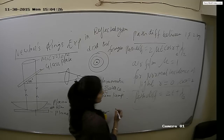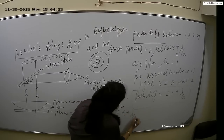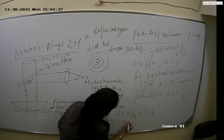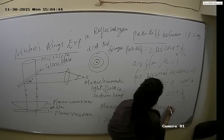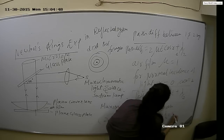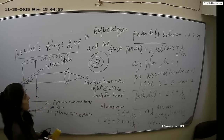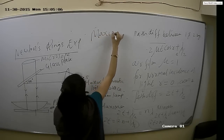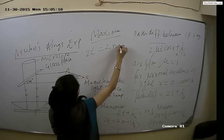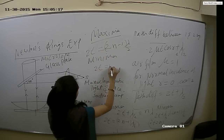Now we calculate the conditions for maxima and minima. For maximum (bright fringe): 2T + λ/2 = nλ, which gives 2T = (2n − 1)λ/2. For minimum (dark fringe): 2T = nλ. These are the conditions for maxima and minima in Newton's ring experiment.